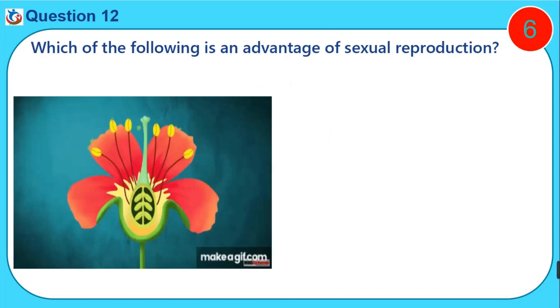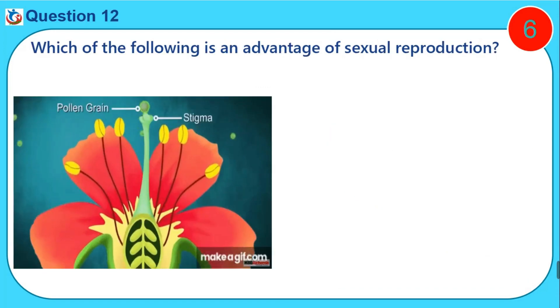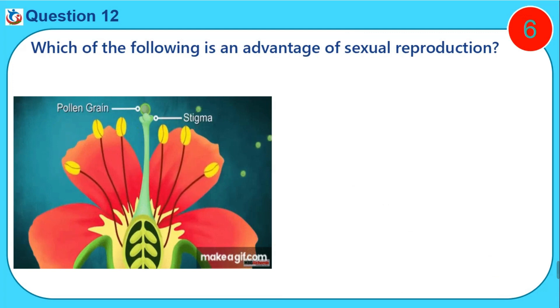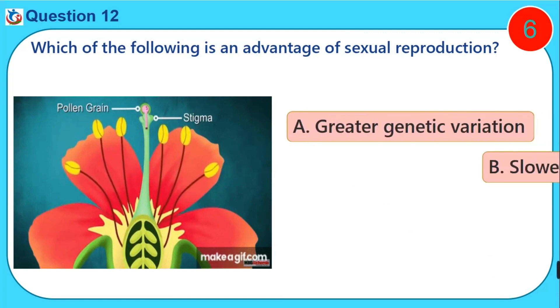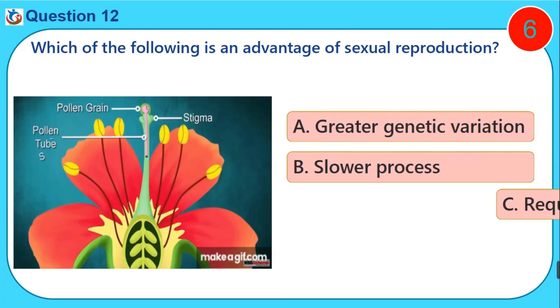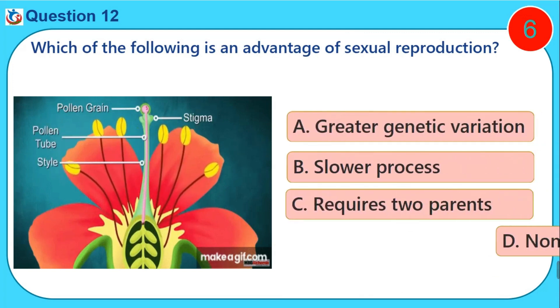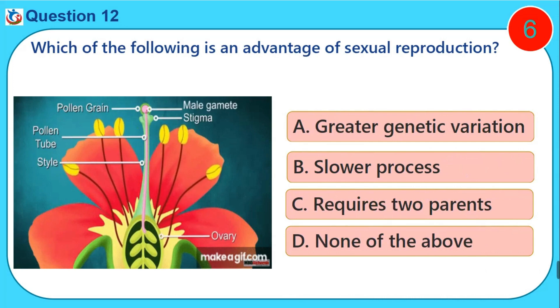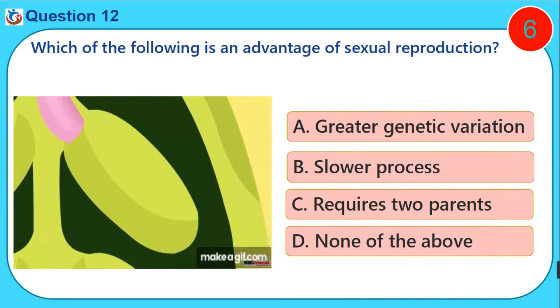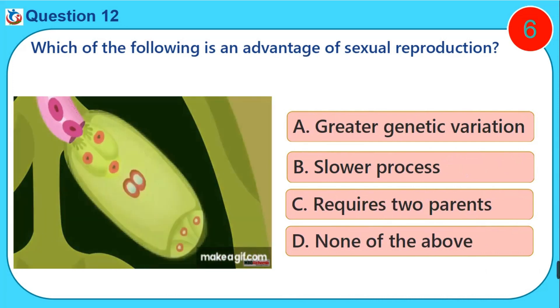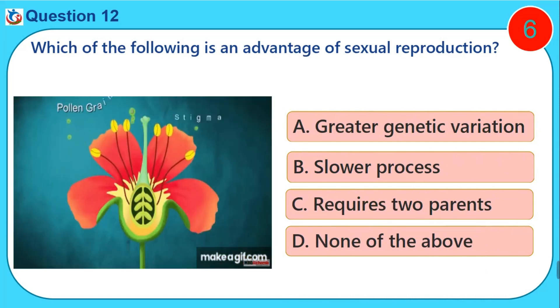Which of the following is an advantage of sexual reproduction? A. Greater genetic variation. B. Slower process. C. Requires two parents. D. None of the above.